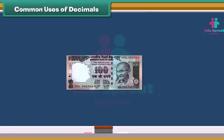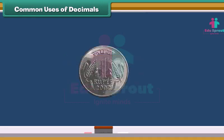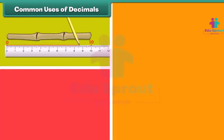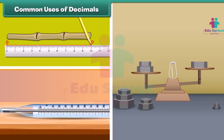Do you know, one rupee is just one hundredth of a hundred rupee. Isn't it interesting? We can also use decimals for measurement, weight and temperature. Therefore, decimals are really very important.